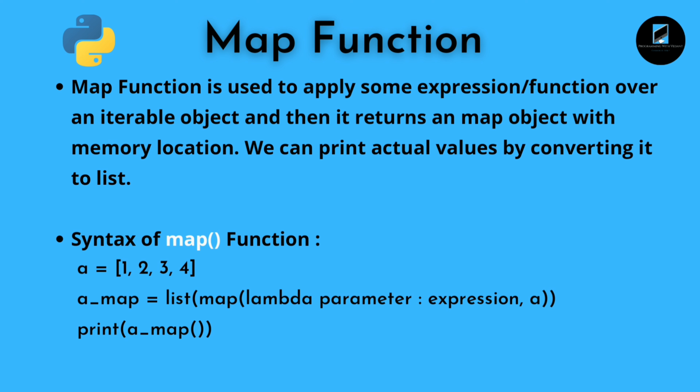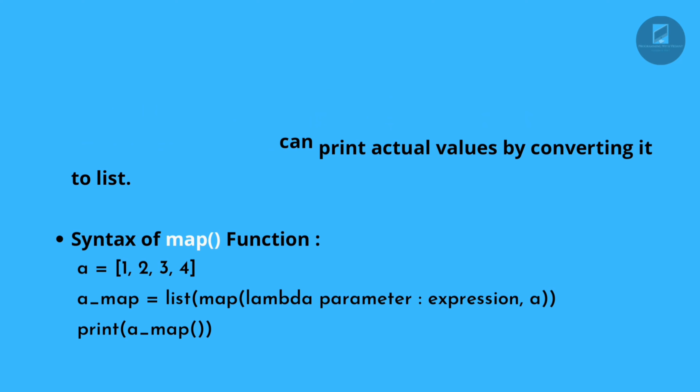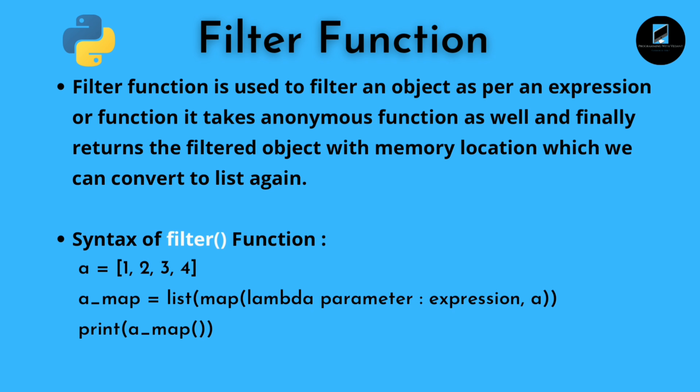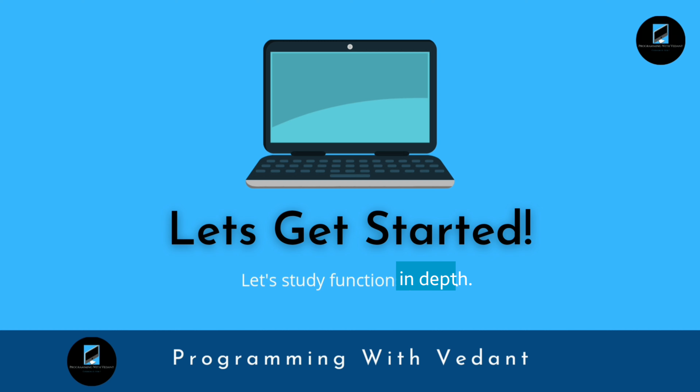We can print the actual values by converting the map object to a list. The syntax of map function: we have a list ranging from 1 to 4, then we map over that list using a lambda function with a parameter and expression, then convert it to a list. The filter function is used to filter an object as per an expression or function — it takes an anonymous function and returns a filtered object with a memory location, which we can also convert to a list. Without any further ado, let's get started and study these functions in depth.